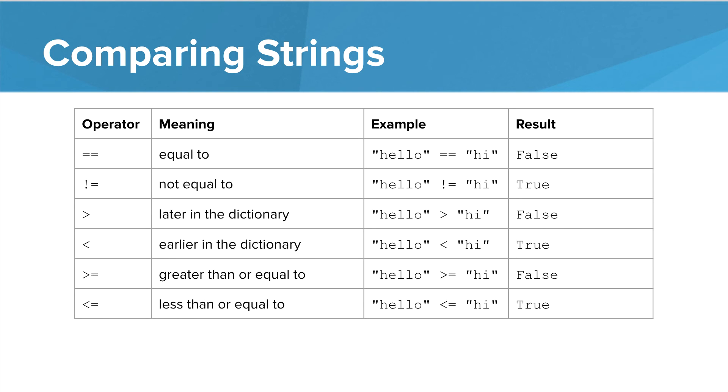Now, I want to talk about each of the operators we saw in this lesson and how it compares to strings. Equal to and not equal to are pretty self-explanatory. Greater than and less than require a bit of explanation. Basically, string 1 is less than string 2 if it would appear earlier in the dictionary. This is tricky because strings can have more than just letters and they can also have capital and lowercase letters.